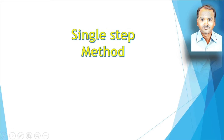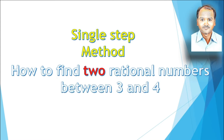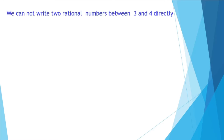Today we are going to learn how to find rational numbers between two integers using the second method, that is the single step method. In this method we are going to find two rational numbers between three and four. It is not easy to write two rational numbers between two integers directly.